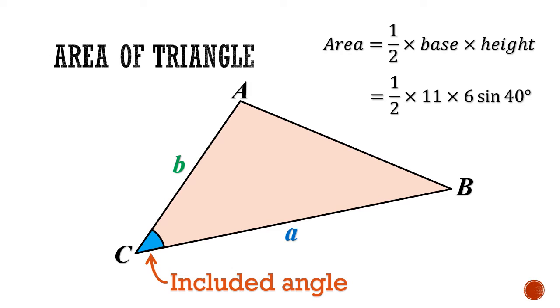Replacing the formula with these new unknowns, we are able to derive the trigonometric formula for the area of triangle to be half times A times B times sine of the included angle. It's important that this angle must be the angle between the two known sides A and B.